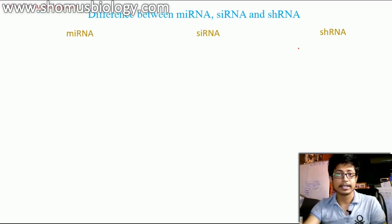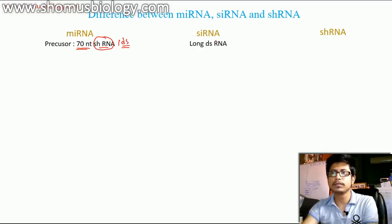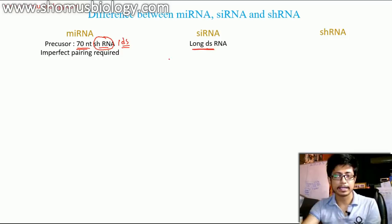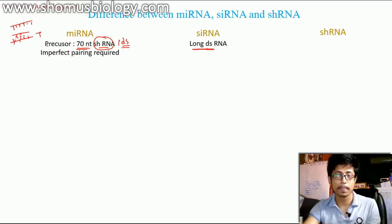Here I draw the difference scheme for miRNA, siRNA, and shRNA. We begin with miRNA — it is a 70-nucleotide-long double-stranded RNA that could be the precursor. For siRNA, the precursor is a long double-stranded RNA. All these interfering RNAs ultimately go and figure out a specific region of a target RNA and destroy it, so that protein synthesis is not possible.